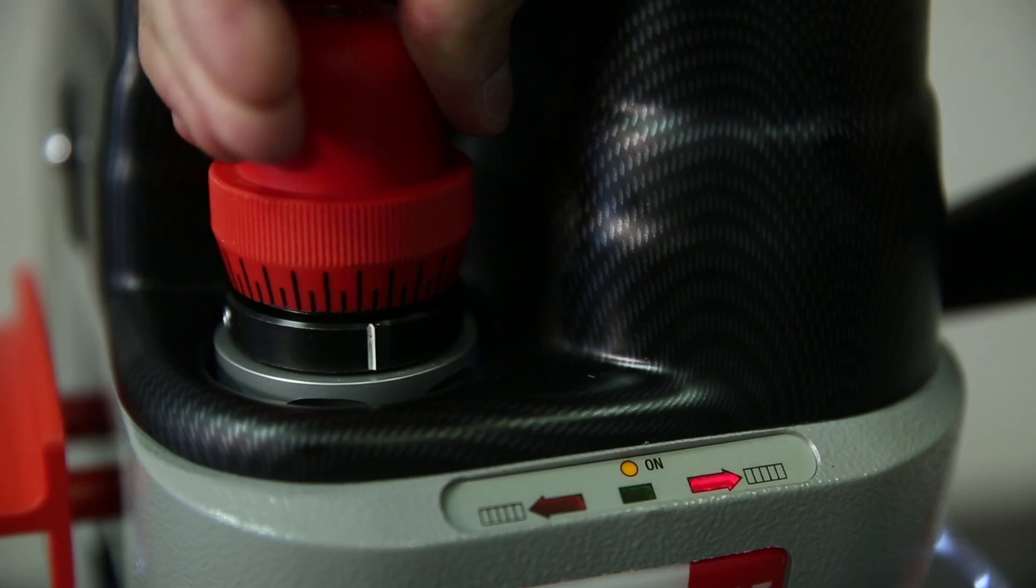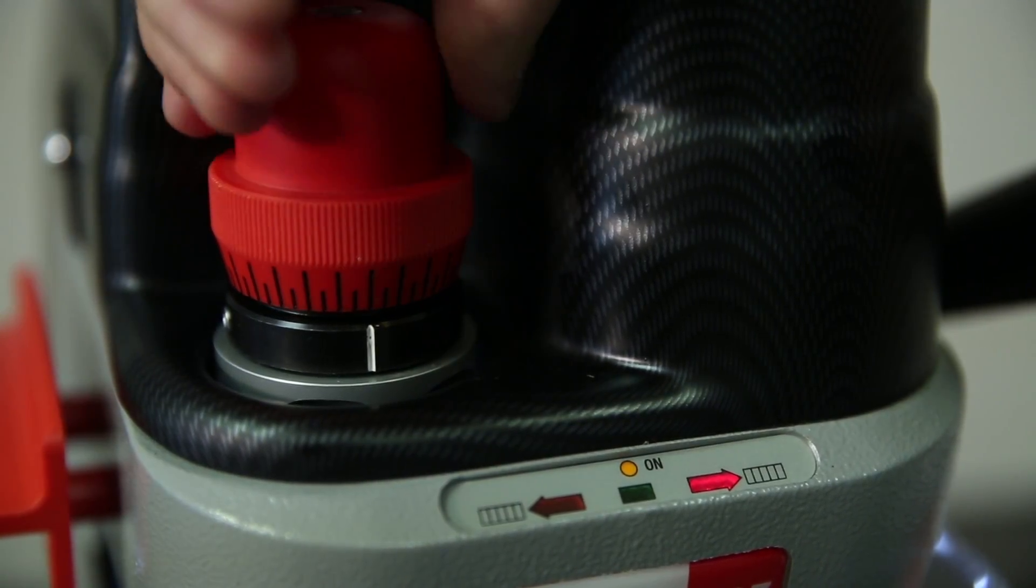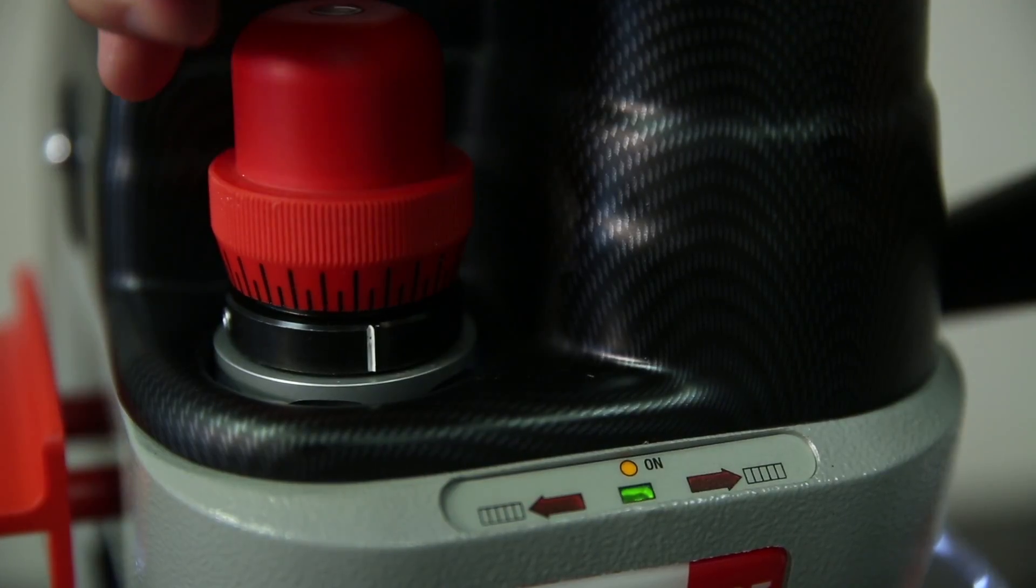Turn the calibration dial in the direction of the lit arrow. Continue to turn the dial until the green light is lit and the machine starts beeping.